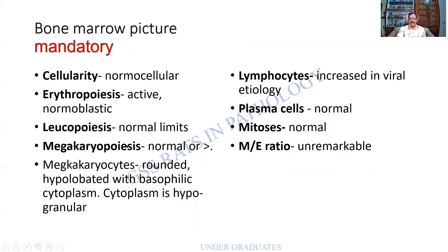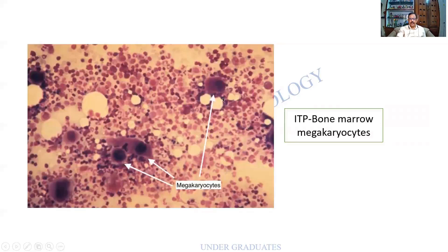The bone marrow of an ITP patient shows increased megakaryocytes — multiple can be found in a single field, which is unusual. They are all hypolobulated and immature, which is classical of ITP. Compared to a normal megakaryocyte seen under electron microscopy, the immature megakaryocytes in ITP are more rounded or hypolobulated with a cytoplasm lacking granules.